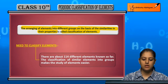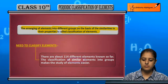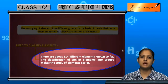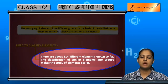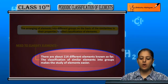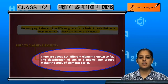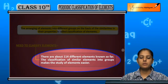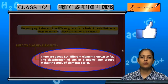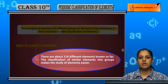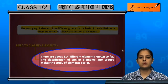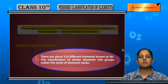What is the need to classify the elements? There are about 114 different elements known — including artificial, synthetic, and natural ones. If you try to remember the individual properties and characteristics of all 114 elements, it is very difficult. So we divide them into groups based on similar properties, which makes it easy to study the elements.